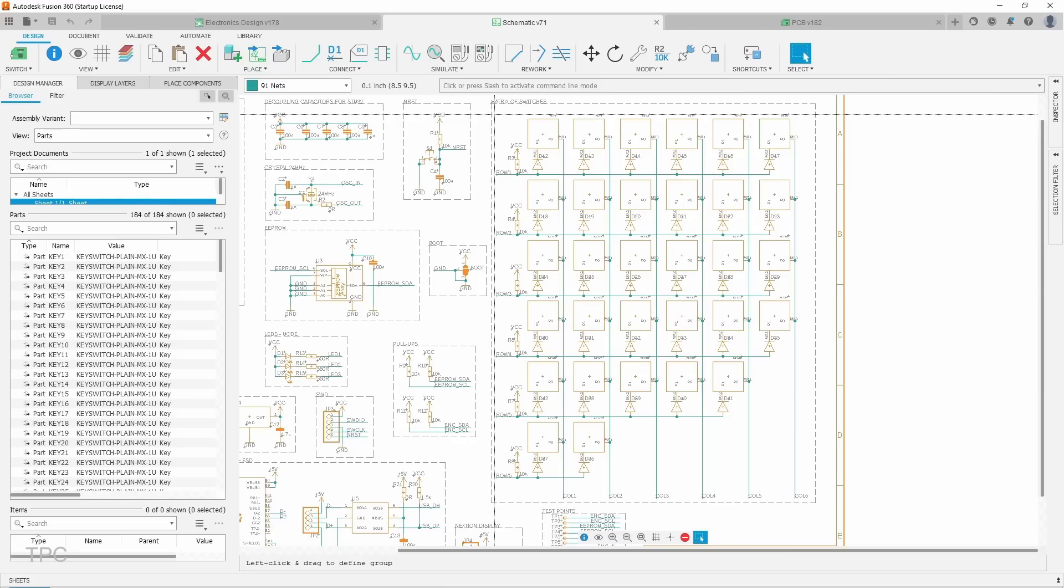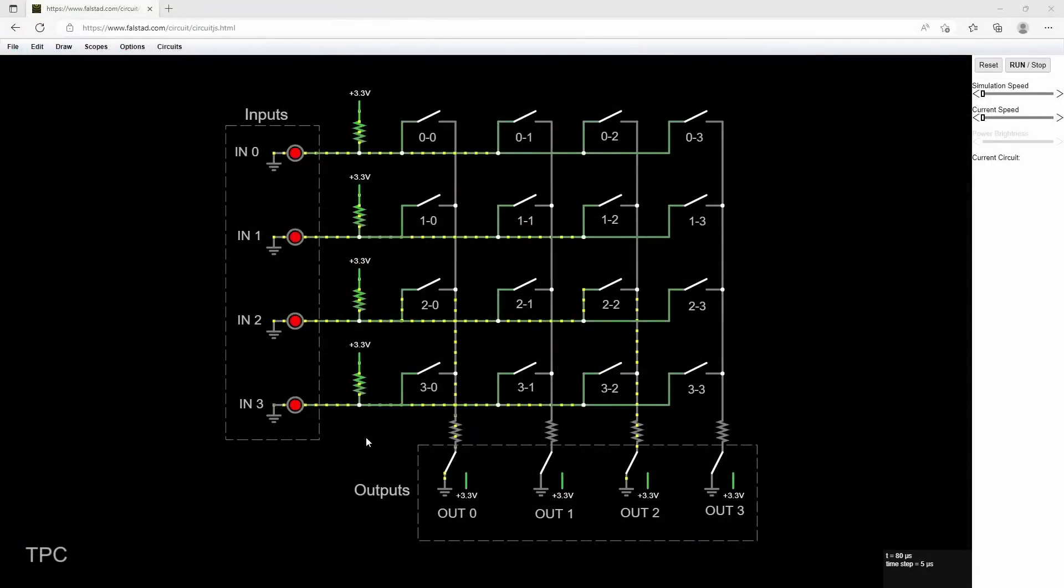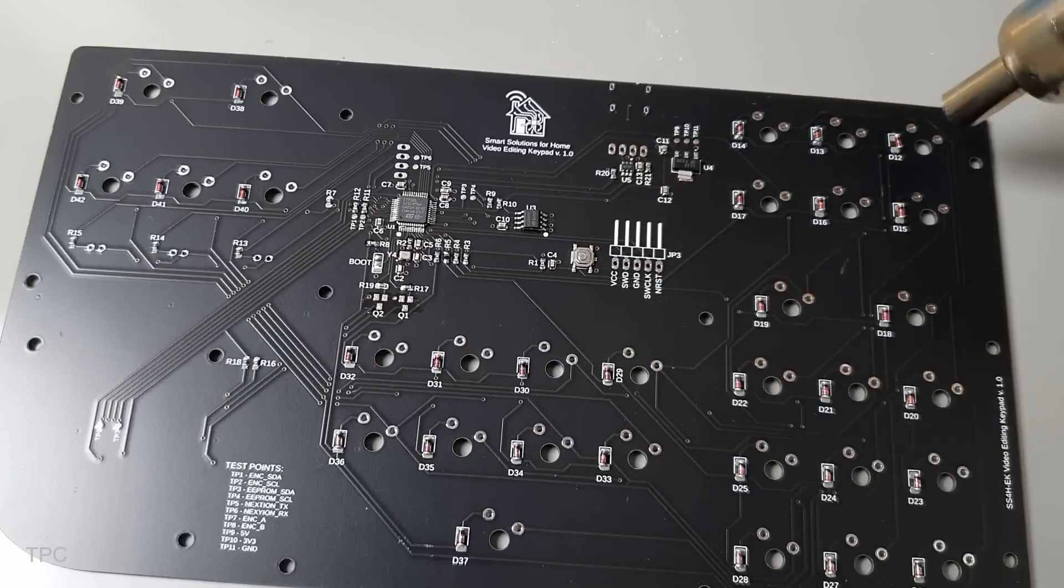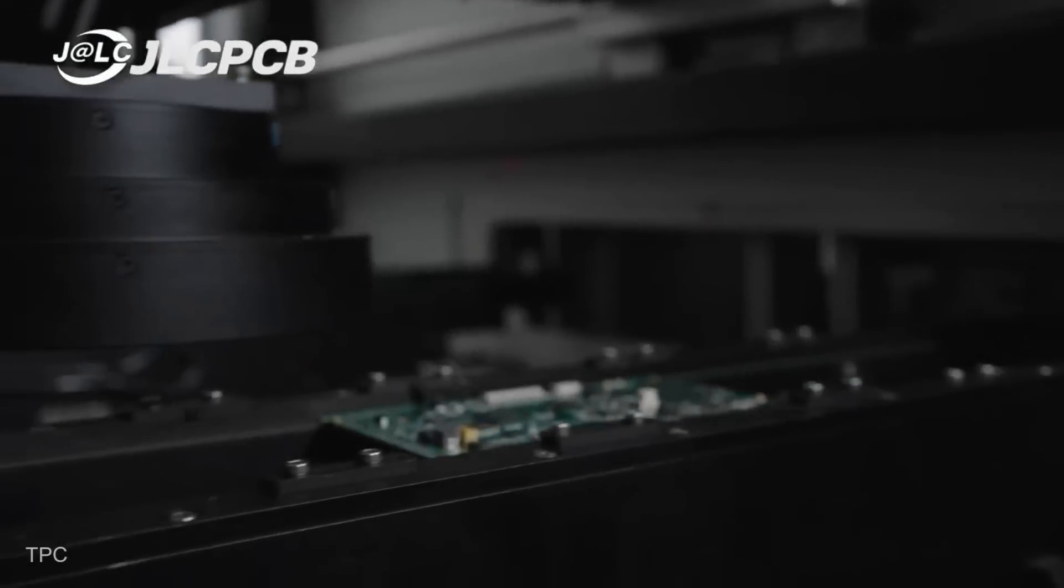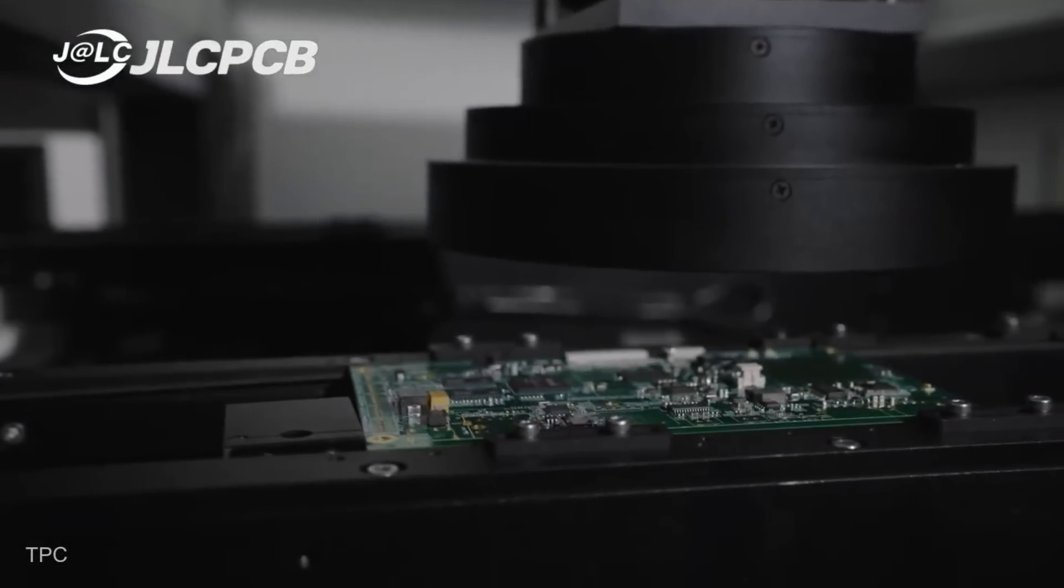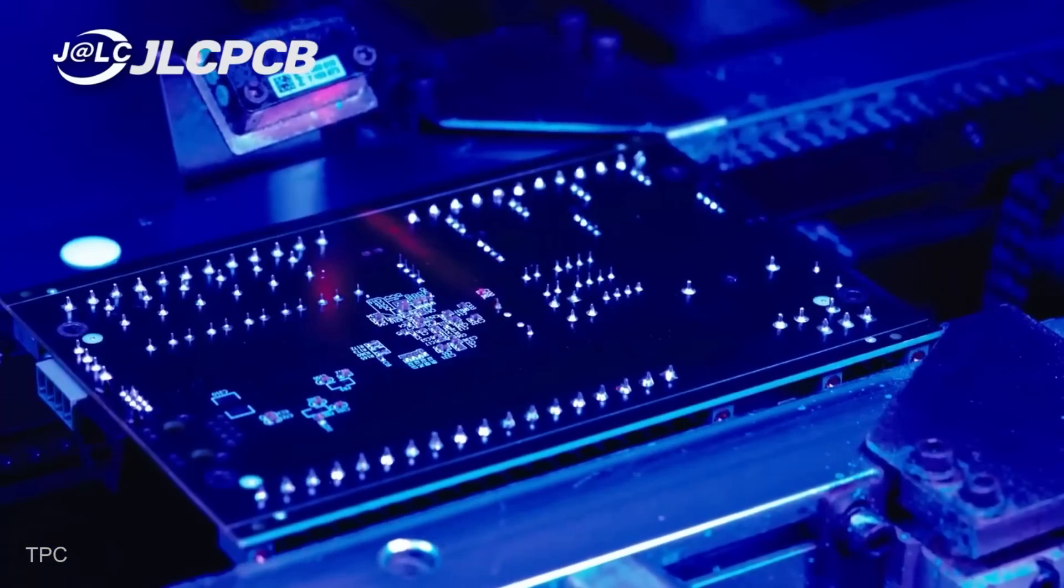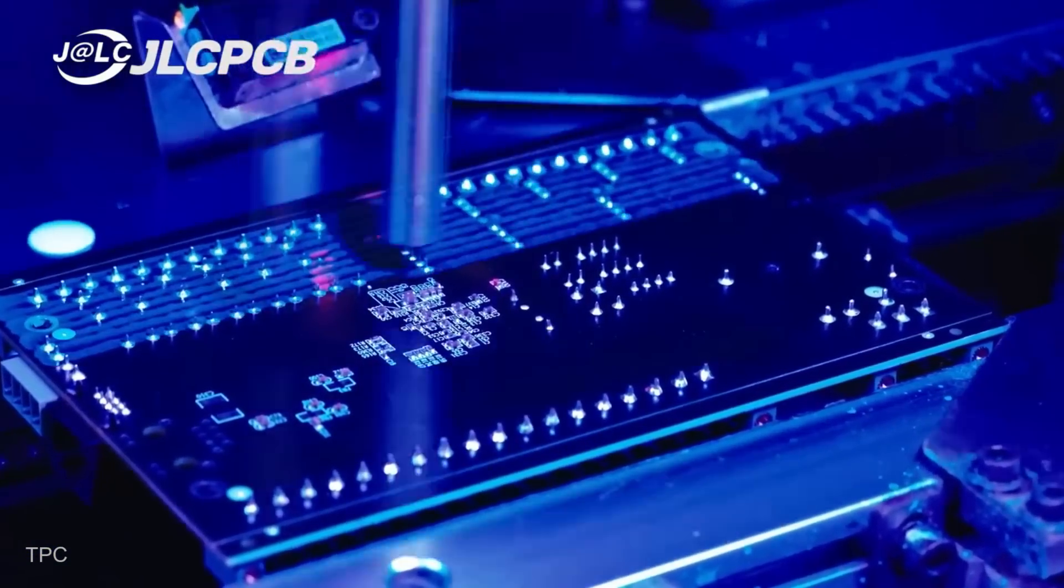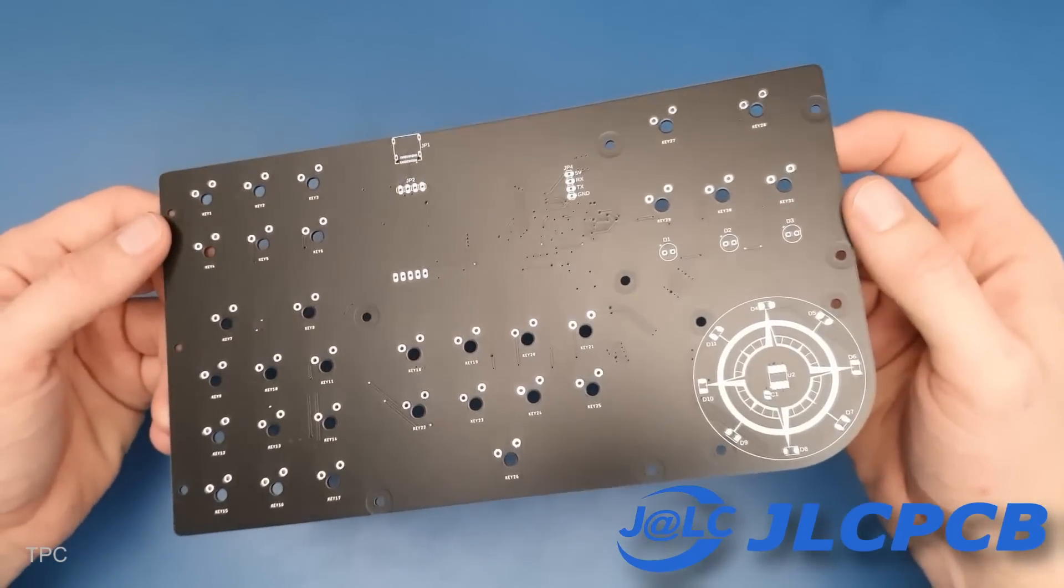Once the design was finalized, he started working on the circuit board. Since he needed a high-quality PCB for smooth functionality, he turned to JLCPCB for manufacturing. Their service ensured that his board was professionally made with precise traces, and the fast delivery meant he could quickly move on to assembly.